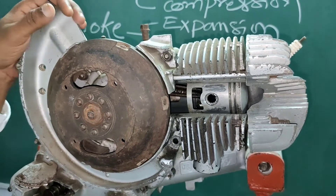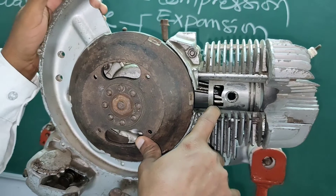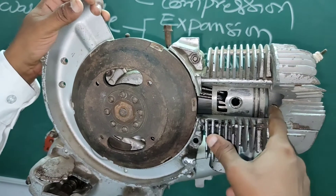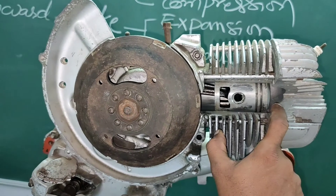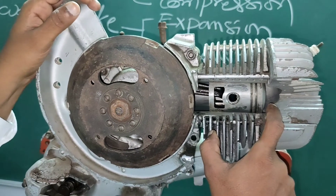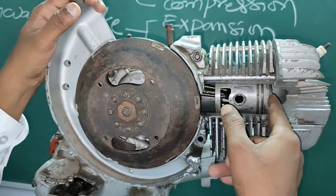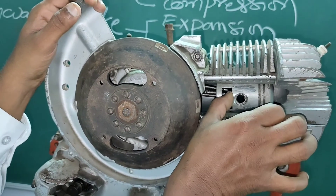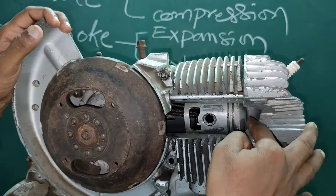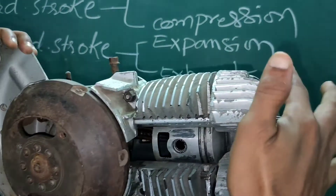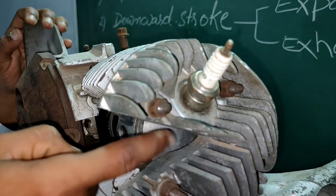The next one is the downward stroke. The downward stroke is the expansion stroke. This is the exhaust. When the spark plug fires, this spark plug produces the power stroke.